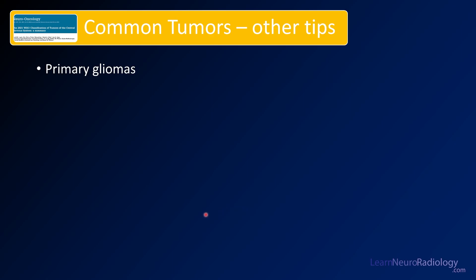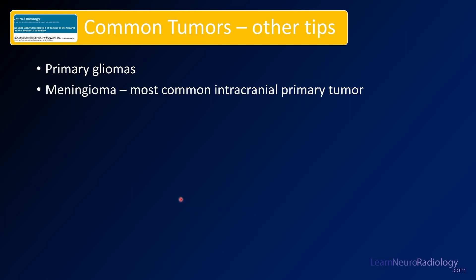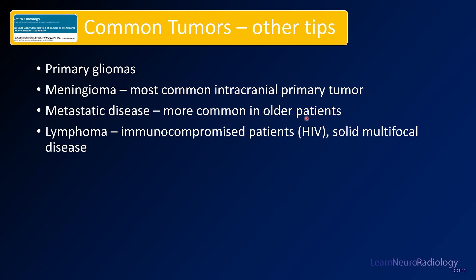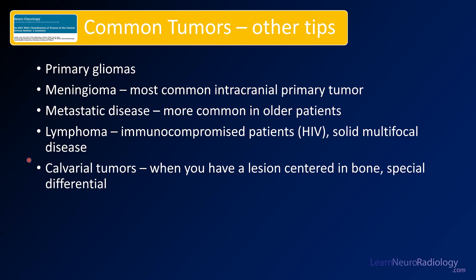Here are some quick facts about other common tumor types. Meningiomas are the most common intracranial primary tumor — extra-axial masses often along the dura, and can involve the bone. Metastatic disease is the most common intracranial tumor overall, common in older patients — if there's another known malignancy or multifocal lesions, think metastatic disease. Lymphoma is common in immunocompromised patients such as those with HIV — solid multifocal disease with abnormal diffusion in multiple areas should raise concern for lymphoma. Finally, when a tumor appears centered in the bone, the differential is different: consider metastatic disease, lymphoma, meningioma, or plasmacytoma.